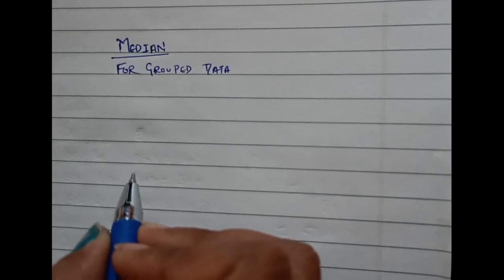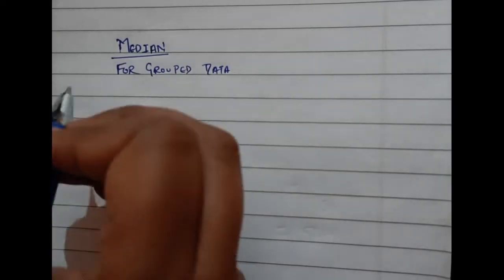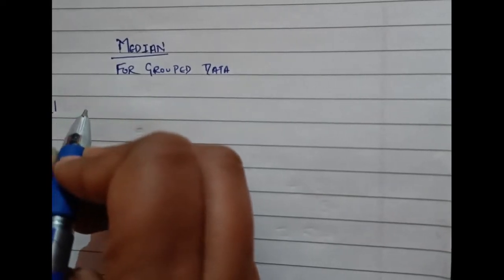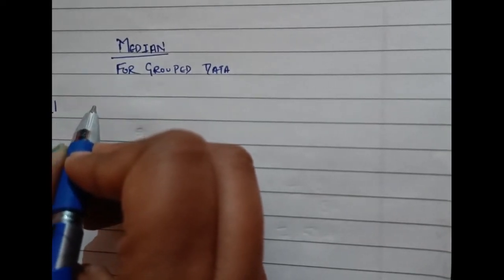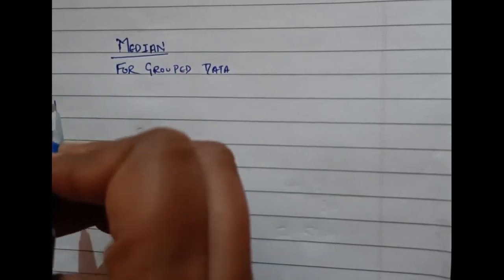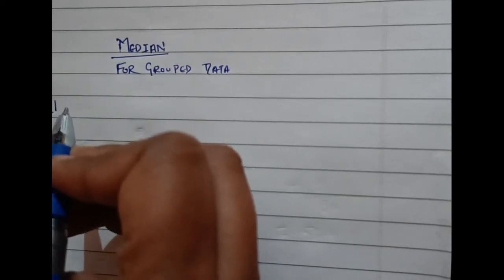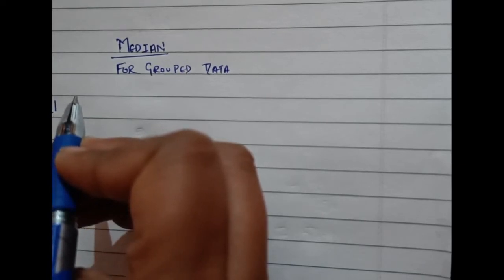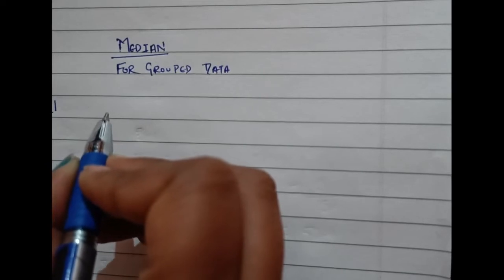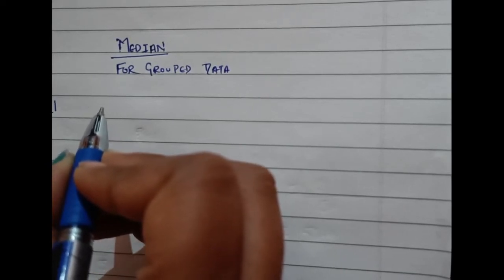Let's take an example. If n is the total frequency, we find the lowest class whose cumulative frequency is greater than n by 2. This is called the median class. Assuming that all items are evenly distributed in the median class, we locate median in this median class as follows.